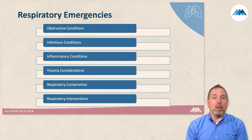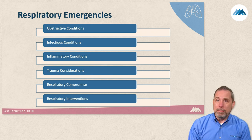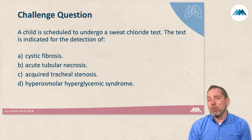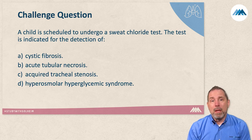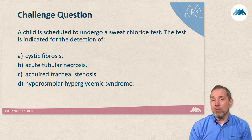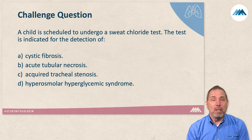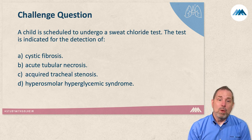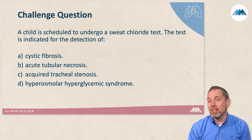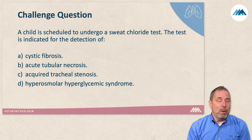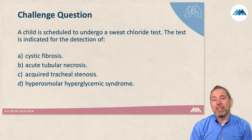Let's jump in with a challenge question. A child is scheduled to undergo a sweat chloride test. The test is indicated for the detection of: A, cystic fibrosis; B, acute tubular necrosis; C, acquired tracheal stenosis; D, hyperosmolar hyperglycemic syndrome. Think about that one, and we'll come back to the answer when we teach that section.